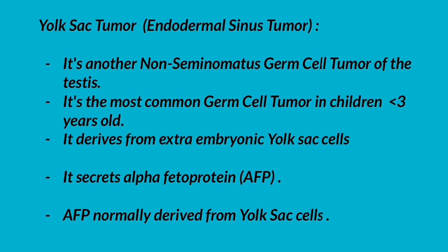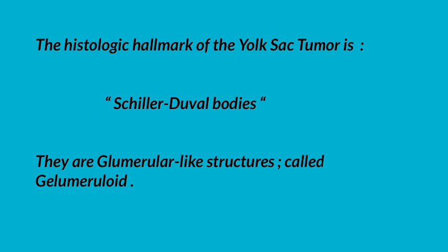Yolk sac tumor, also called endodermal sinus tumor, is another non-seminomatous germ cell tumor of the testis. It is the most common germ cell tumor in children less than 3 years old. It derives from extra-embryonic yolk sac cells and secretes alpha-fetoprotein, which is normally derived from yolk sac cells. The histologic hallmark is Schiller-Duval bodies, which are glomerular-like (glomeruloid) structures.